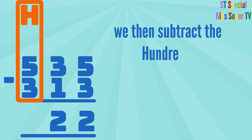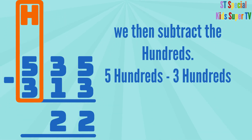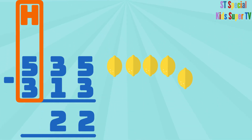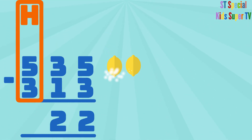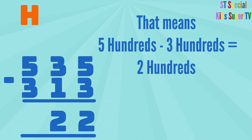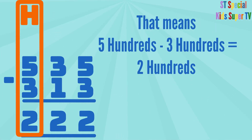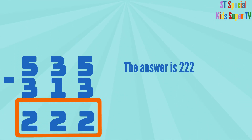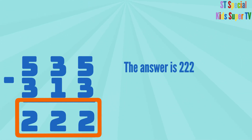We then subtract the hundreds: 5 hundreds minus 3 hundreds. 1, 2, 3, 4, 5 lemons minus 1, 2, 3 lemons equals 1, 2 lemons. That means 5 hundreds minus 3 hundreds equals 2 hundreds. So you write the 2 under the hundreds column. Therefore, 535 minus 313 equals 222. So the answer to our subtraction problem is 222.